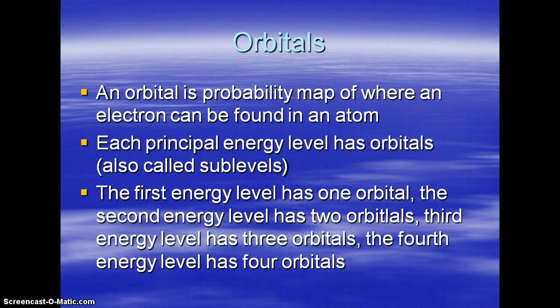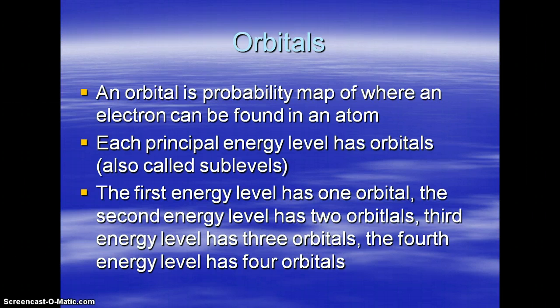Then the idea of orbitals came along. An orbital is basically a probability map — a ninety percent probability of where an electron can be found in an atom. It still maintains the energy level concept, and these are our sub-levels. The first energy level, the first set distance away from the nucleus, has only one orbital. The second energy level is going to have two orbitals in it. The third energy level has three orbitals, and the fourth has four orbitals. These are spaces where an electron can be found.